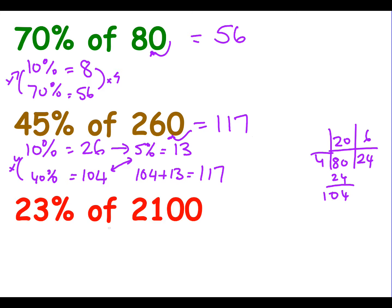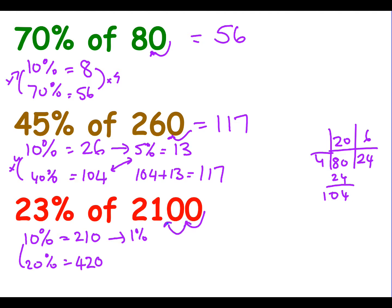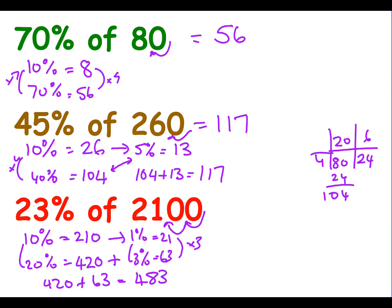And finally, 23% of 2,100. The 10% rule: divide by 10 to give us 210. So 20% is doubling that to 420. I need to work out 1%, which is dividing by 100 to give me 21. I want 3%, so multiply by 3 to get 63. To get 23%, combine 20% with 3%: 420 plus 63 gives us 483. So 23% of 2,100 is 483.